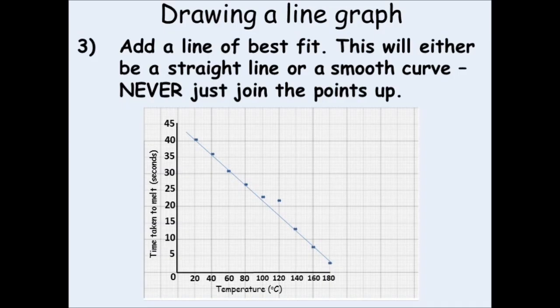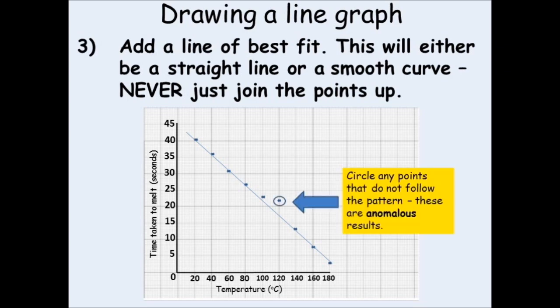Now, if there are any points which do not follow the pattern of the other points, you should draw a circle around it. These points are called anomalous results, and they are results which do not follow the pattern.